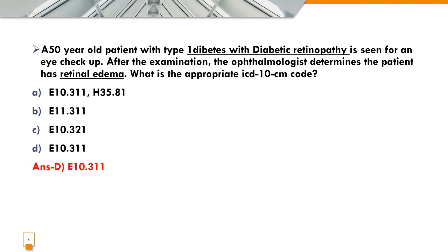Next question involves type 1 diabetes mellitus with diabetic retinopathy. Code E10.3 is for type 1 diabetes mellitus with unspecified diabetic retinopathy. Option D is E10.311, and option C is E10.321: type 1 diabetes mellitus with mild non-proliferative diabetic retinopathy with macular edema. This question specifies non-proliferative retinopathy.